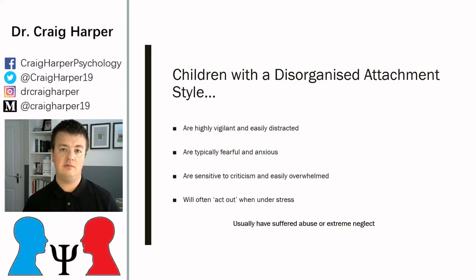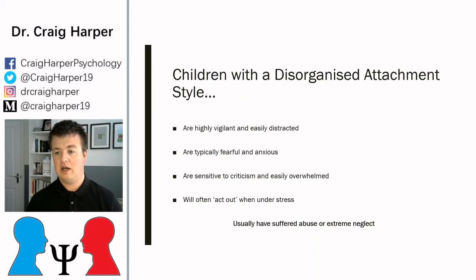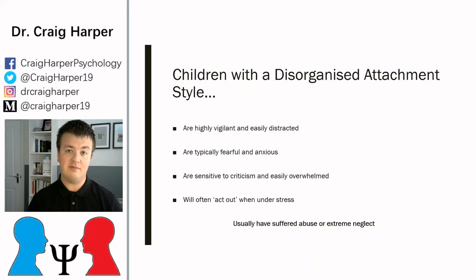The fourth attachment style is disorganized attachment. Typically these people have been subject to some kind of abuse or neglect. They'll be very sensitive to criticism, fearful, and anxious, and they'll act out under stress without any capacity for self-regulation or emotion regulation. They are highly vigilant, looking out for threats, and even the slightest inference that there might be a threat in the environment may lead them to act out preemptively in order to mitigate that potential threat.